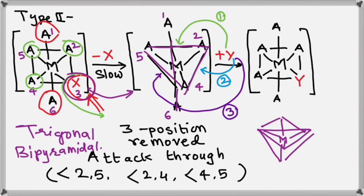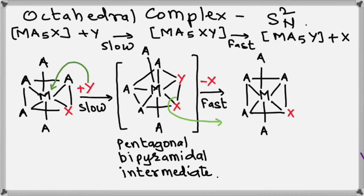So that was case number two. Now we'll go for SN2 type of mechanism. We know, in case of SN2, one of the reactants, MA5X, reacts with Y with the formation of intermediate, whose valency you can see is seven.